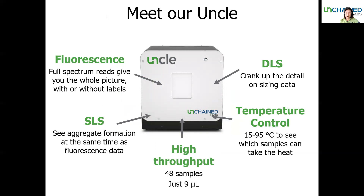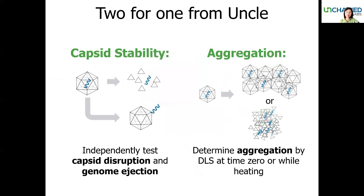Now I'm going to introduce you to UNCO. UNCO is the only all-in-one stability assessment platform built for biologics, including AAV. It uses three different detection methods — DLS, SLS, and full-spectrum fluorescence detection — to provide aggregation, capsid disruption, and genome ejection information. In combination with thermal control, you can interrogate your sample stability across a temperature range from 15 to 95°C with as little as 9 µL of sample.